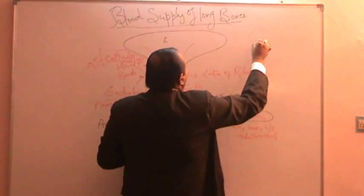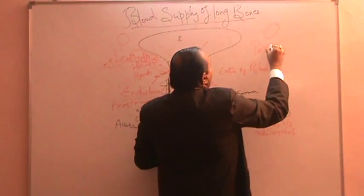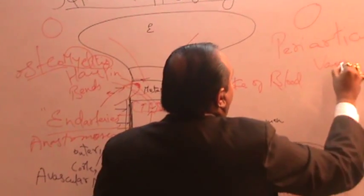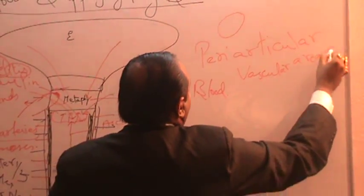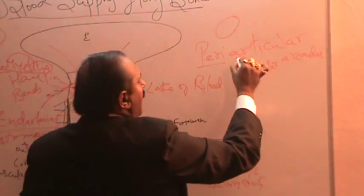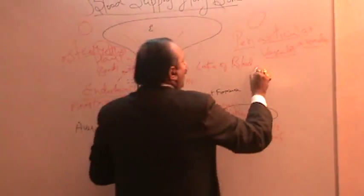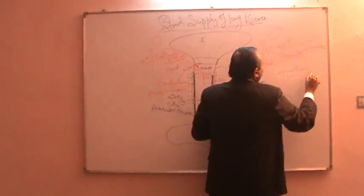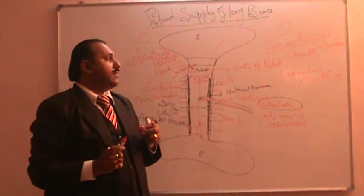For the epiphysis, there are periarticular vascular arcades — peri meaning around, articular meaning joint. These are blood vessels arranged in the form of arcades around the joint, also called circular vascular arcades.